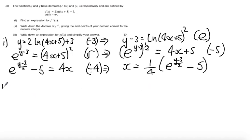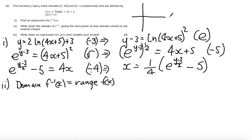Let's look at part 2. Part 2 says write down the domain of f^(-1)(x) giving the endpoints of your domain correct to the nearest integer. Well, the domain of f^(-1)(x) is equal to the range of f(x). So really this is a problem about finding the range of f(x). In order to find the range of f(x) we need to consider the graph of f(x).